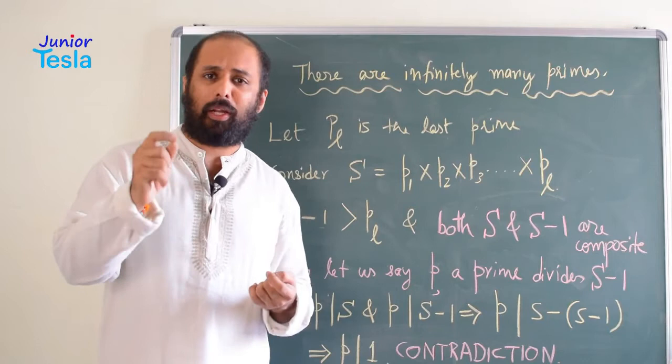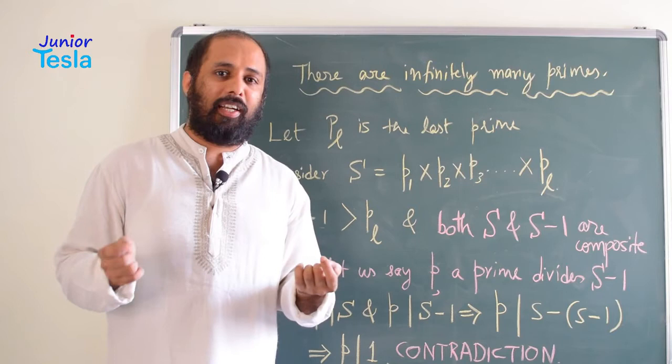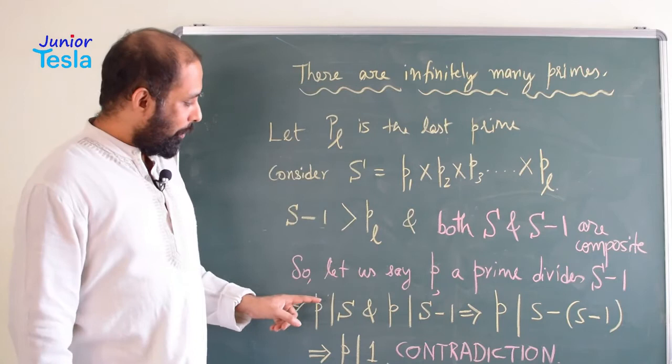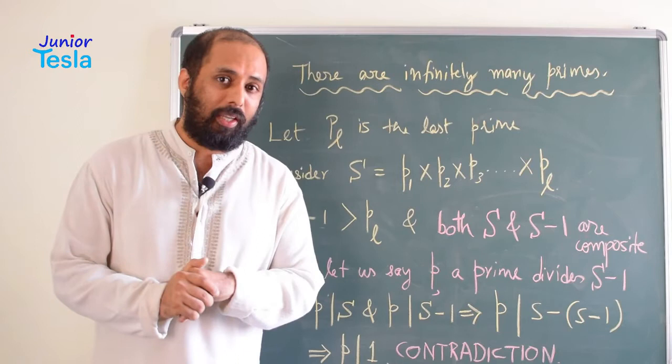Now, if it is a composite number, then definitely it has at least one prime divisor. So now since S minus 1 is a composite number, let us say it is divisible by a prime number P. We have taken a prime number P that divides S minus 1.